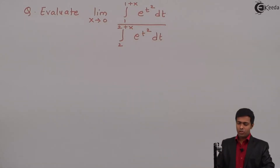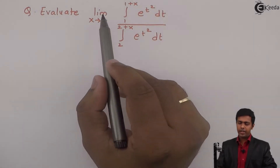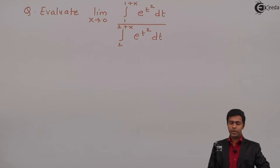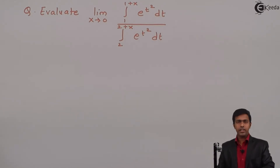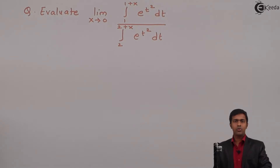Hello everyone. Here in this problem we have to evaluate the limit as x tends to 0 of the integration from 1 to 1+x of e^(t²) dt, divided by the integration from 2 to 2+x of e^(t²) dt.